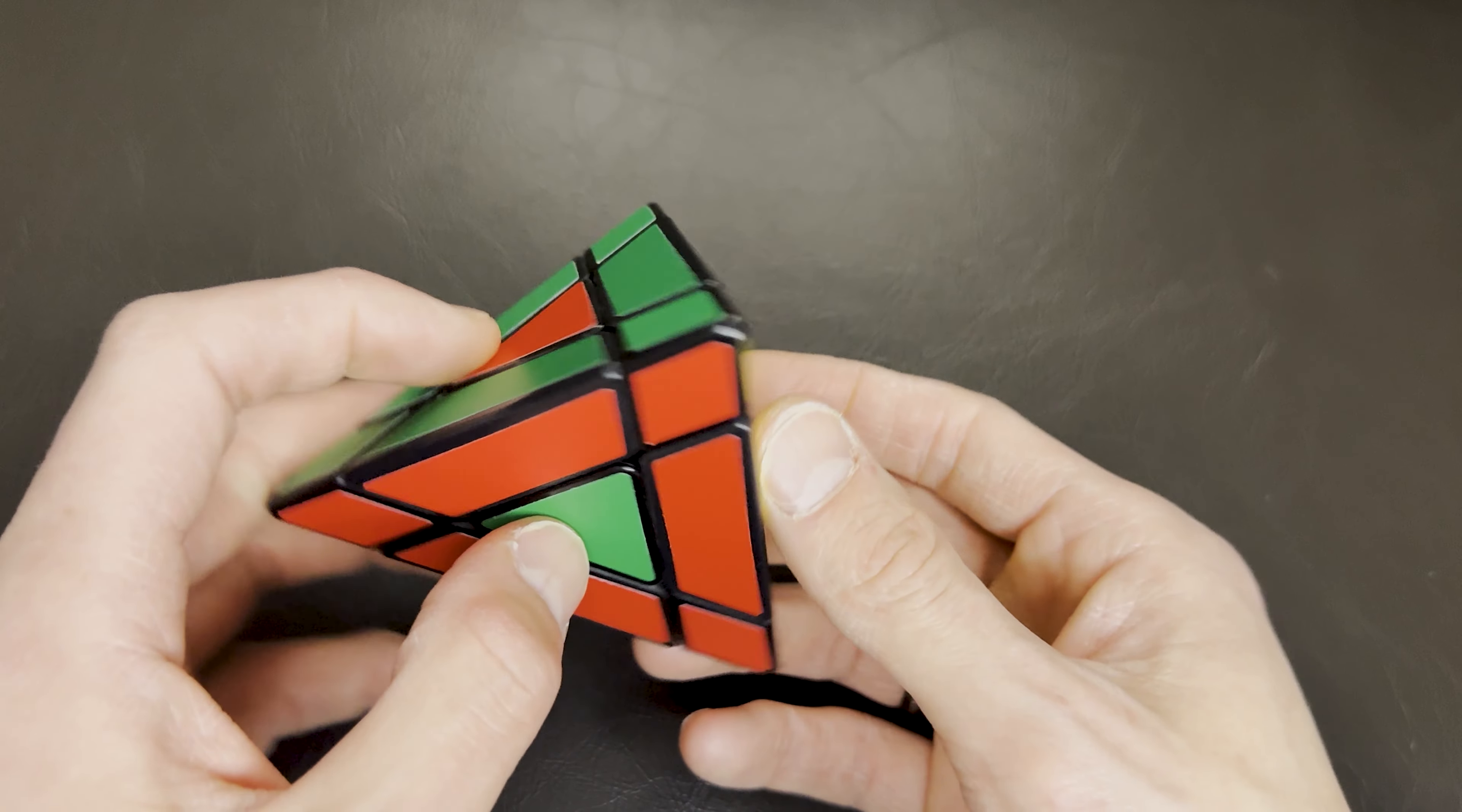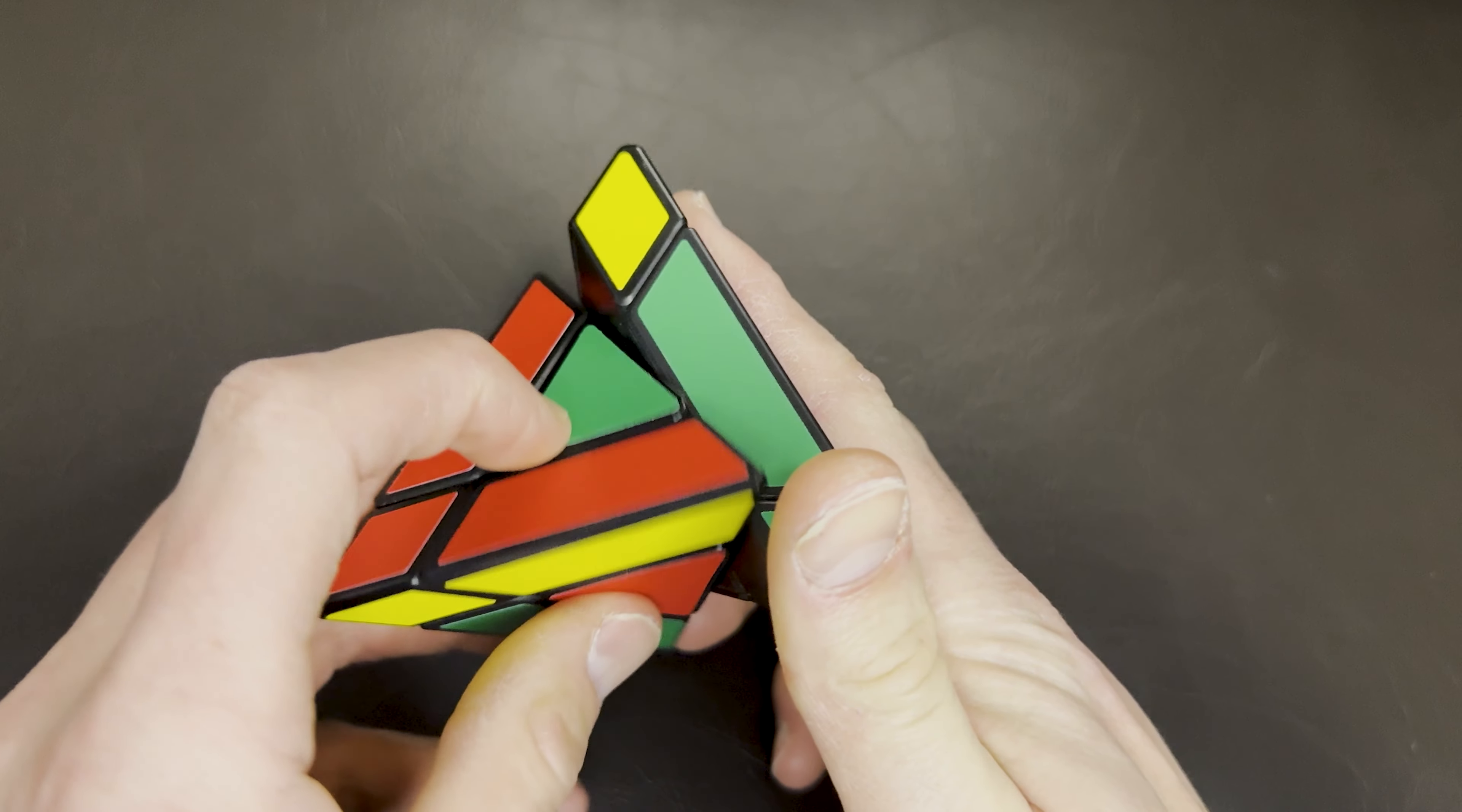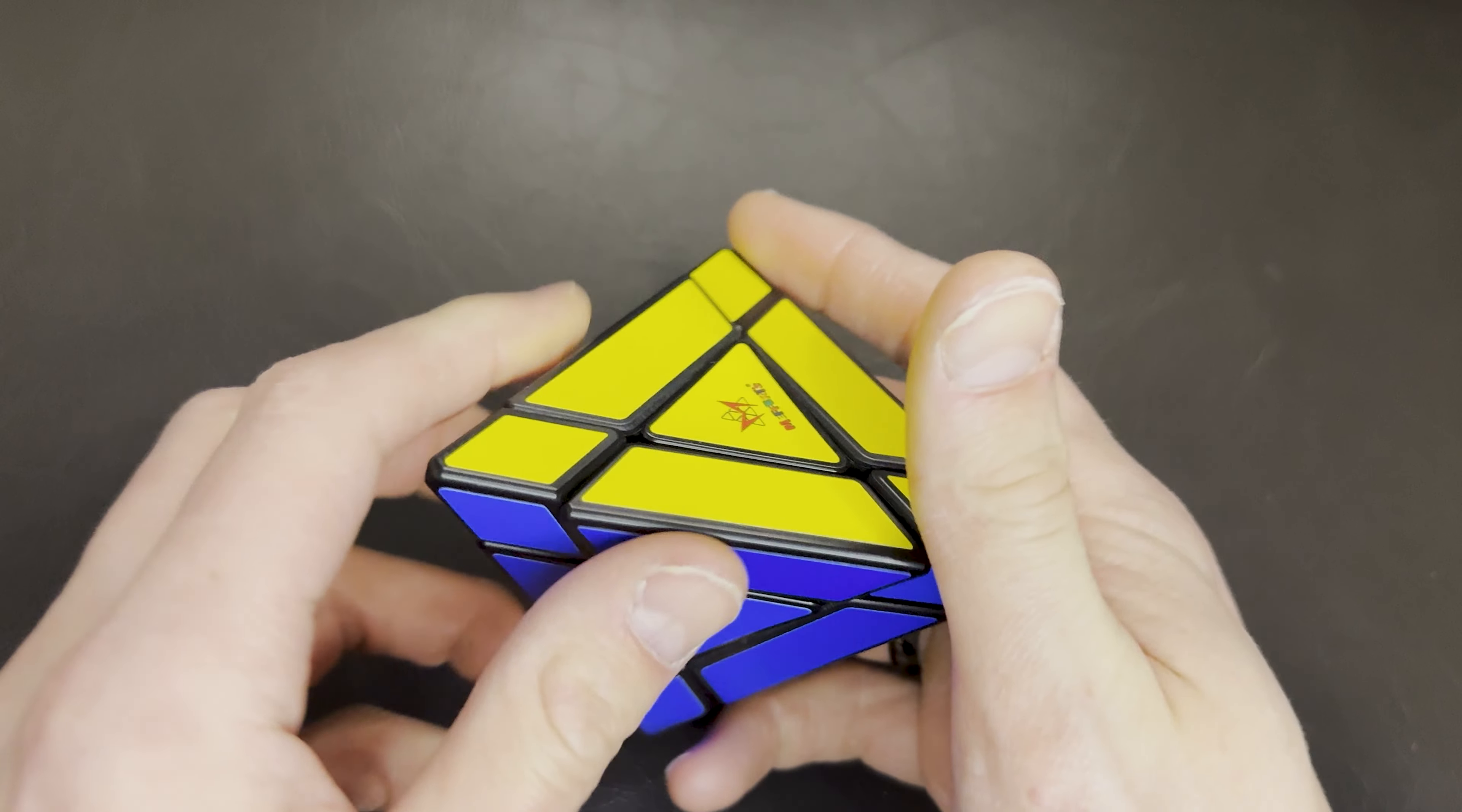The next step is the triangles and they're pretty simple. So we have to find two that need to be switched. These two don't need to be switched. These two do need to be switched. And all we do is go down, down, up, up, down, down, up, up, down, down, down, up, up. And this thing is solved.